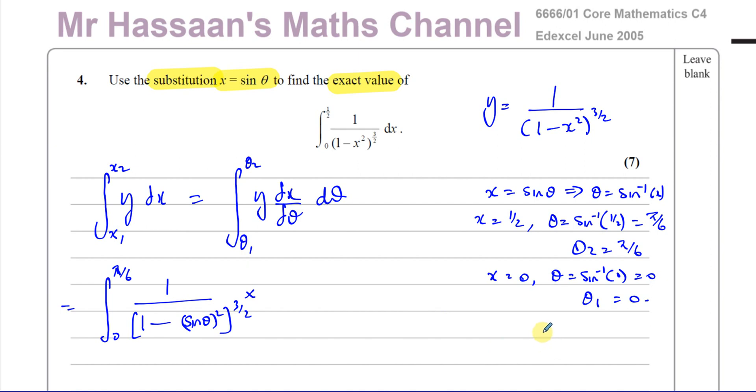And then multiply that by dx d theta. So I've got to find what dx d theta is. Now, we know x equals sine theta. So we can say dx d theta, if we differentiate this, is going to be cosine theta. So there's going to be a cosine theta over here.